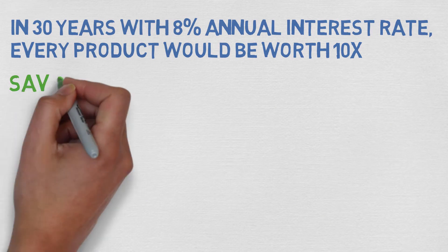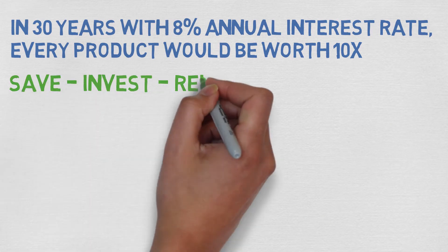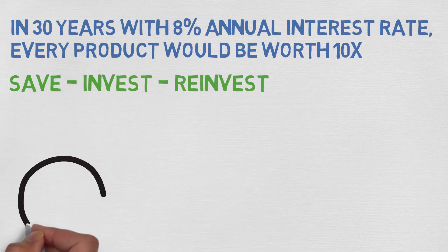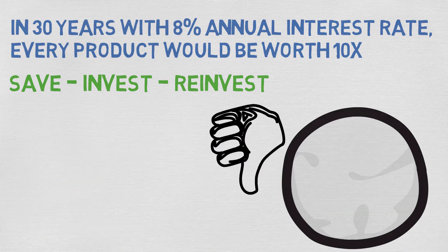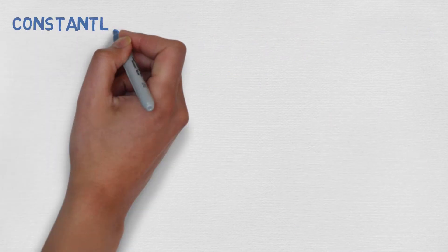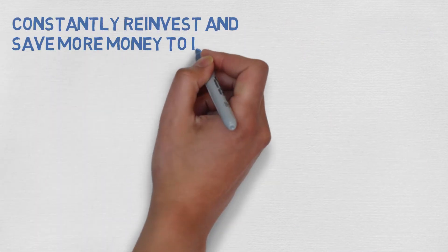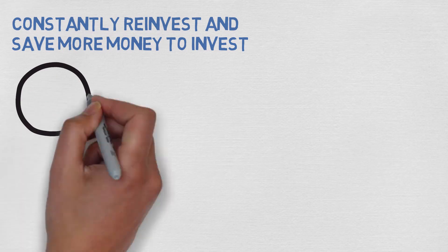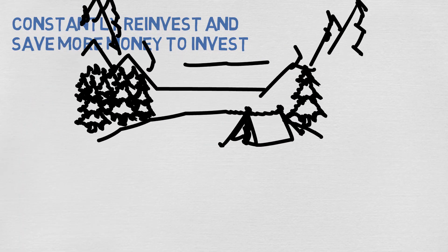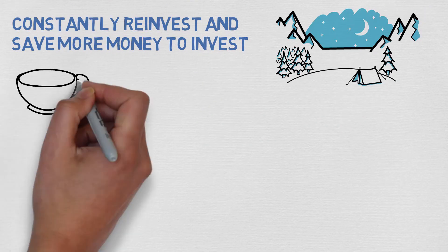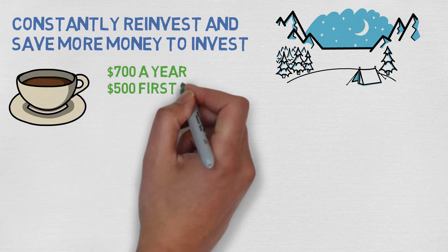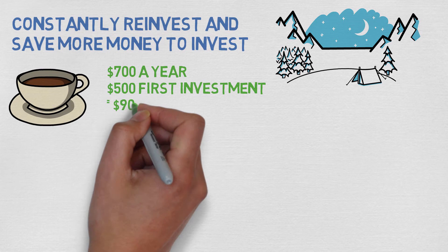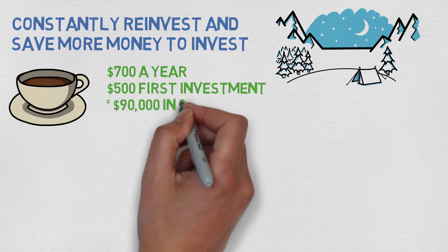I'd rather save that money, invest it in the stock market, and reinvest the profits — slowly making the snowball so big it becomes an avalanche. If you managed to save that 700 dollars a year and your first investment was 500 dollars, you would have over 90,000 dollars in 30 years.